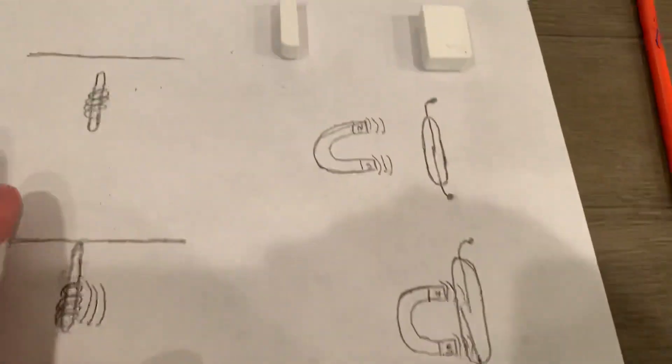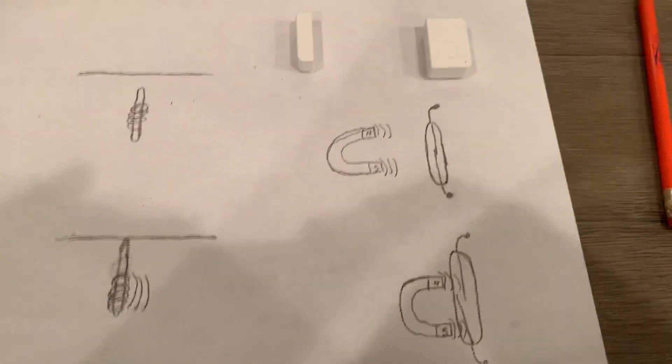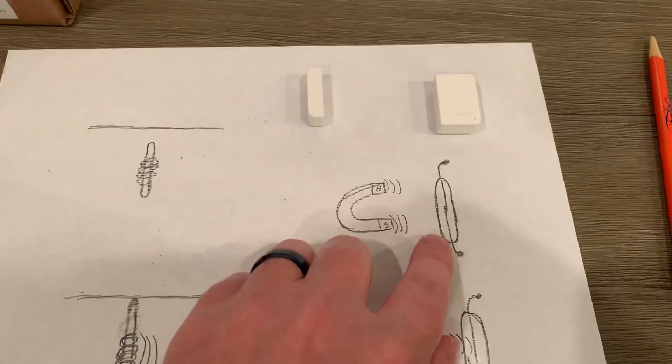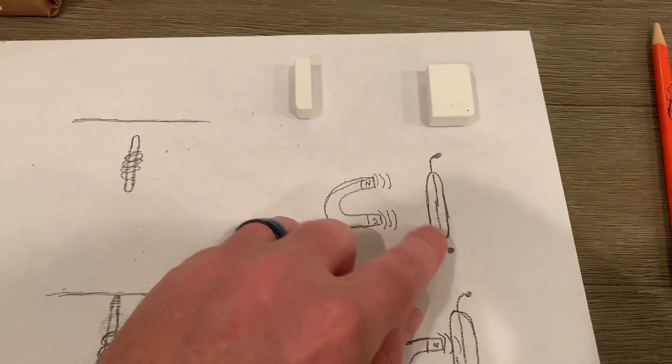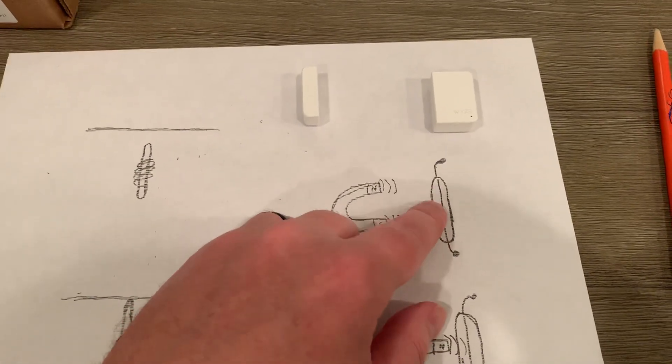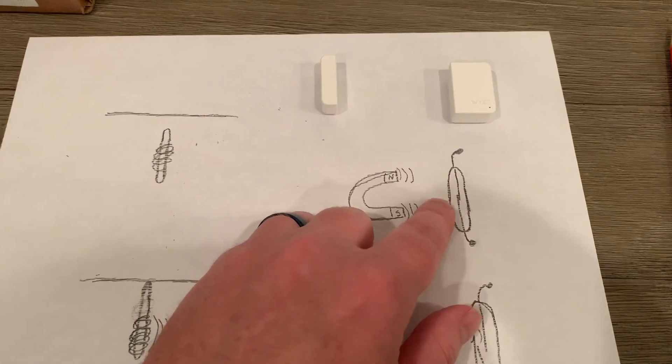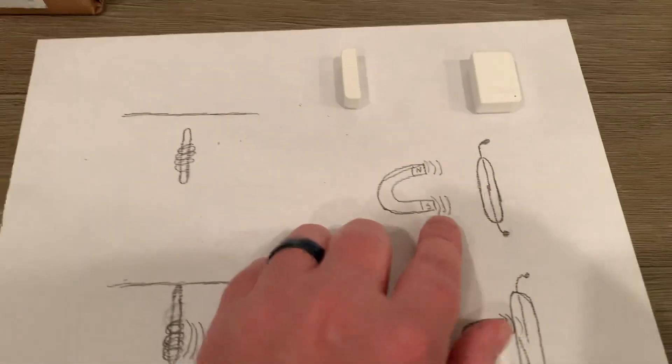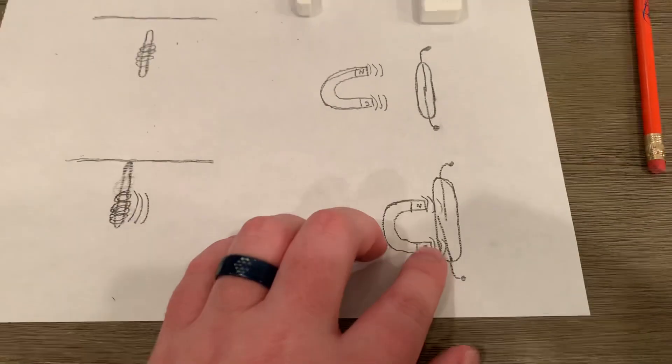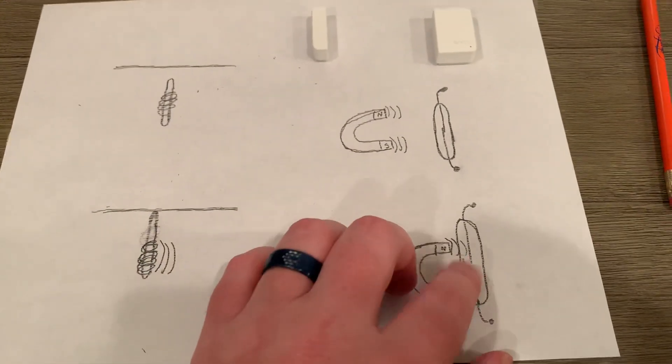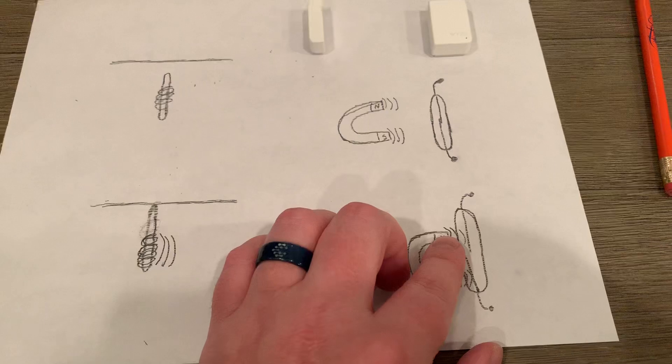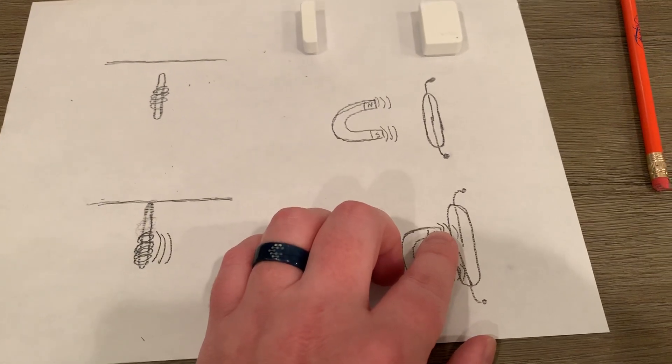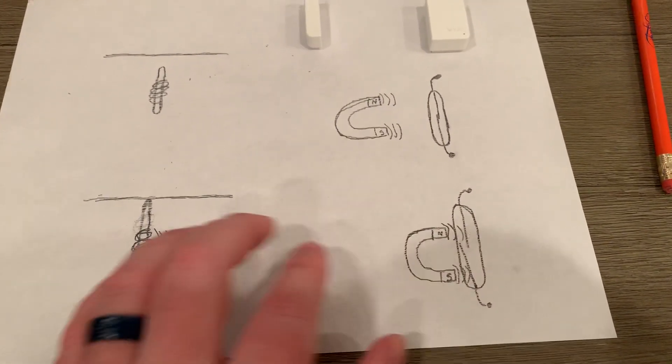I drew this crude little diagram. Basically, this is what's inside: a little glass tube and a piece of metal that normally touch. If the magnet is too far away, they're touching. If the magnet gets closer, it pulls them apart, and when that connection gets severed, the sensor says that it's open.